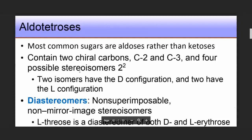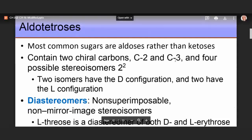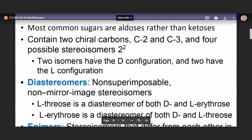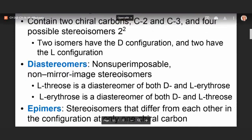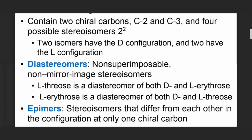The most common sugars are aldoses rather than ketoses. Tetroses contain two chiral carbons — carbon two and carbon three — giving four possible stereoisomers (2^2 = 4). Two of them have the D configuration and two have the L configuration. This is always the case: if a sugar has, say, 50 possible stereoisomers, 25 are D and 25 are L.